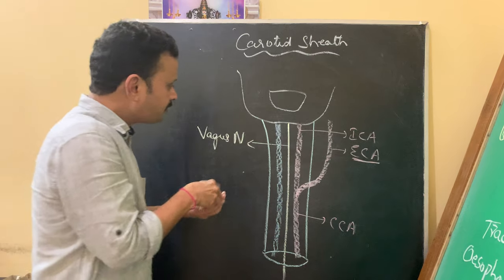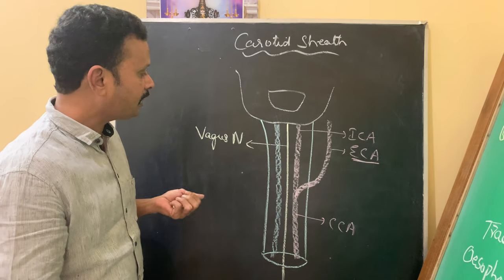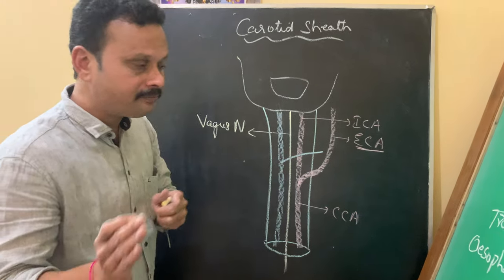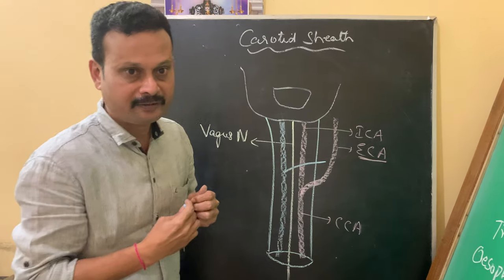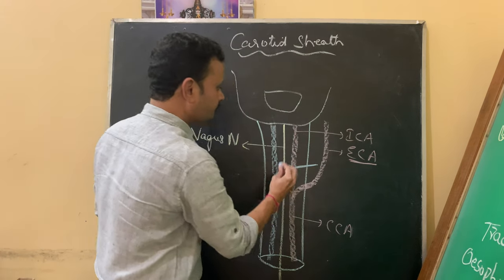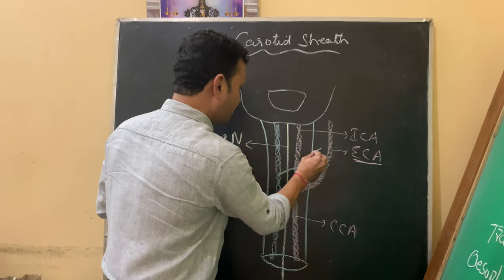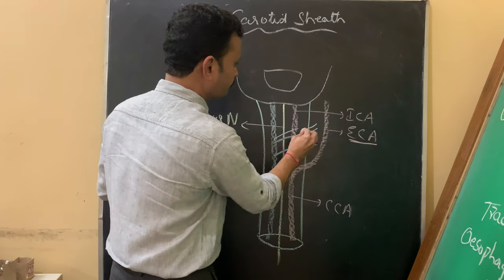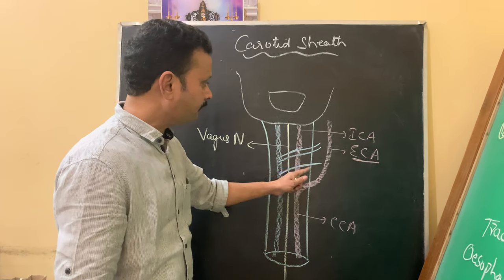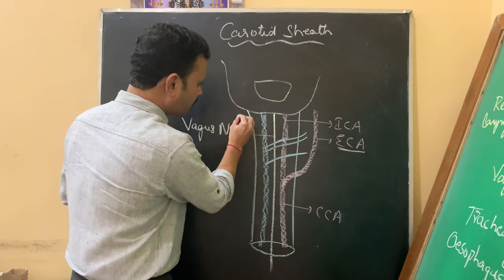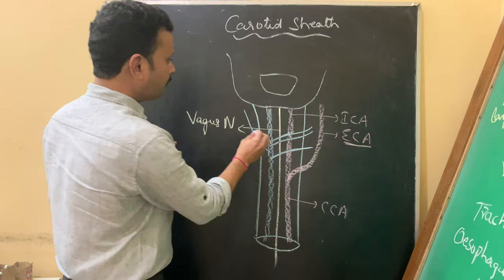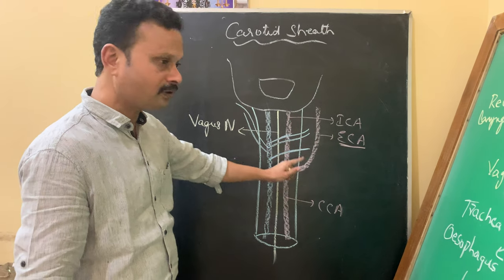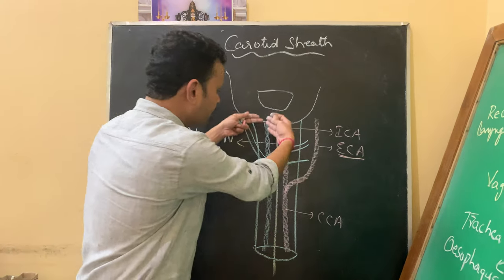Number two are the tributaries of the internal jugular vein, which correspond with the names of the branches of the external carotid artery: superior thyroid vein, lingual vein, facial vein, occipital vein, and posterior auricular vein. These are the five tributaries of the internal jugular vein which pierce the carotid sheath and open into the internal jugular vein.